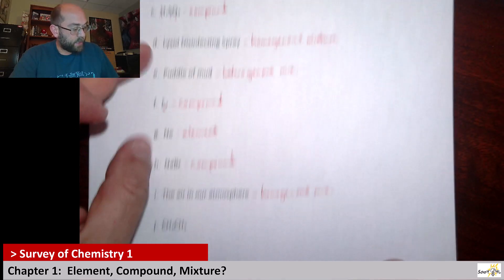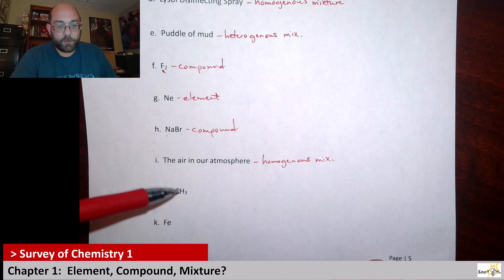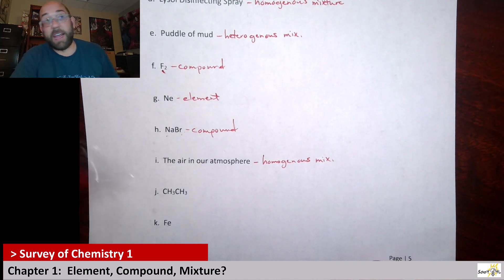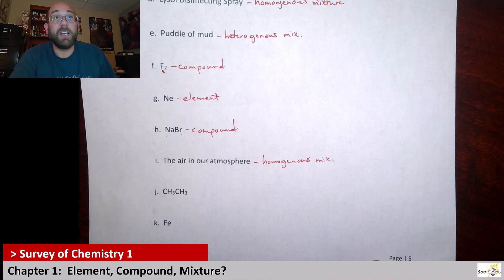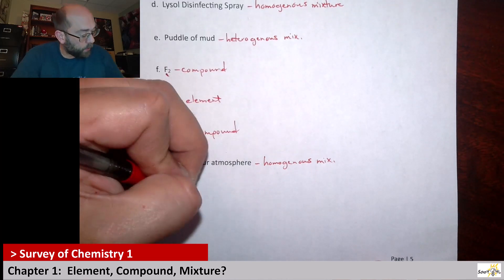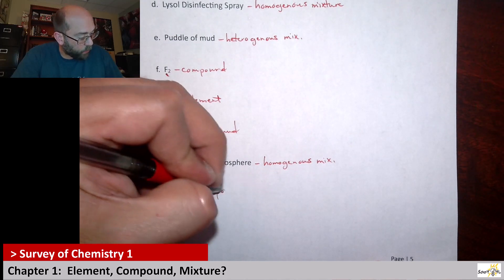Next up we have CH3CH3. This is actually called ethane. But ethane has both carbons and hydrogens in it. And so this isn't just one element, it's multiple elements. So I would consider this also a compound.